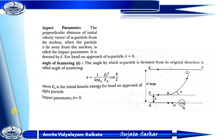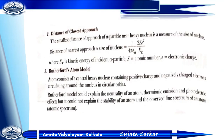Distance of closest approach — this is another important topic. The distance of closest approach of an alpha particle to a heavy nucleus is a measure of the size of the nucleus. The formula is: r = (1/4πε₀) × (Ze²/Ek), where Ek is the kinetic energy of the incident alpha particle, Z is the atomic number, and e is the electronic charge.